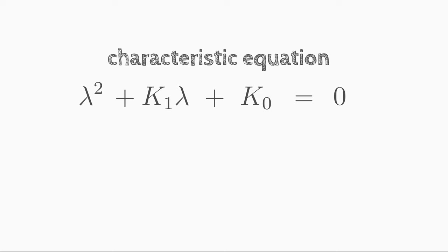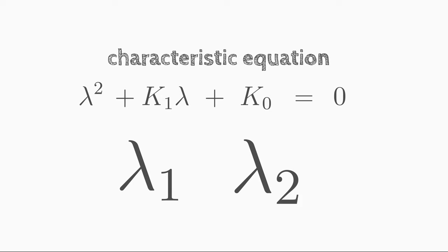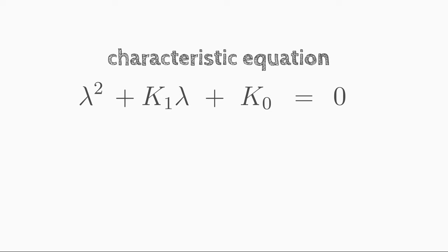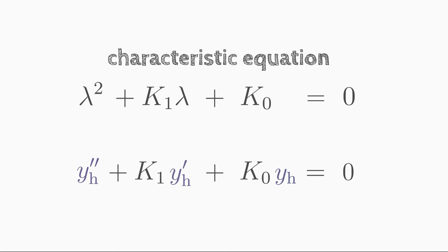We factor out c times e to the power of lambda x. If we divide by this factor, then we get the so-called characteristic equation for lambda. When we solve this equation, we find the unknown lambda. Since it is a quadratic equation for lambda, we get two solutions, lambda 1 and lambda 2, and we have to consider both of them.